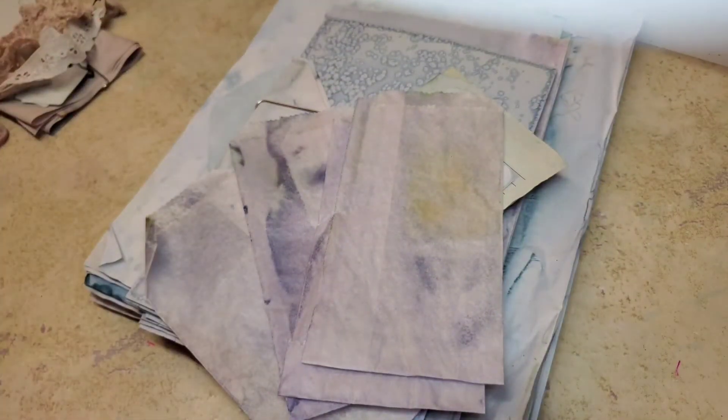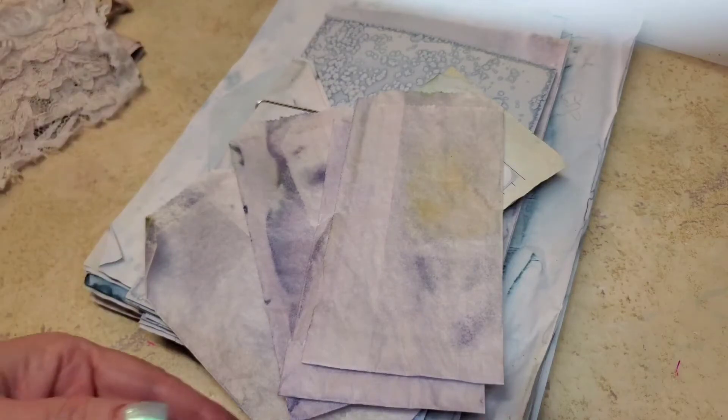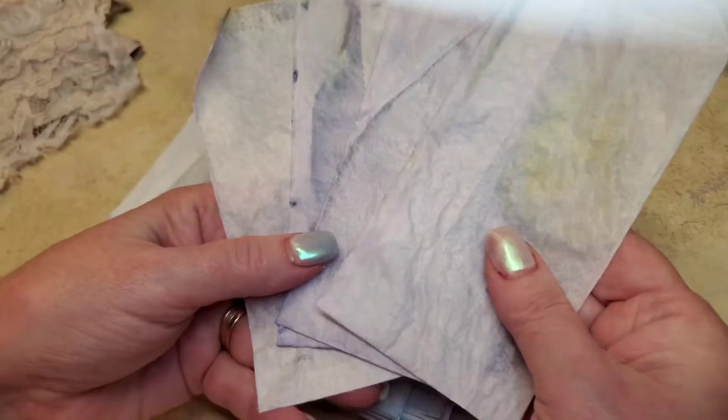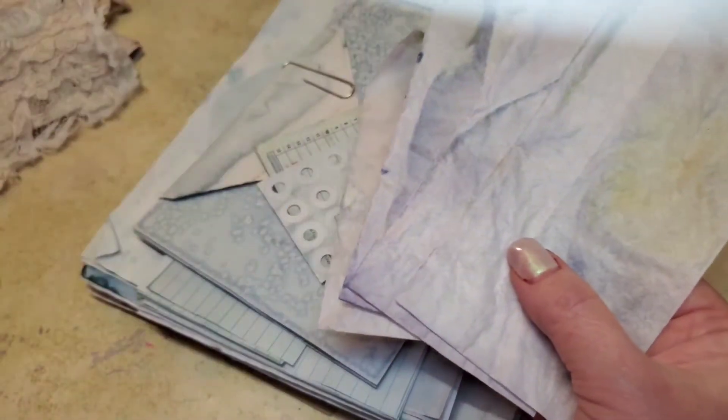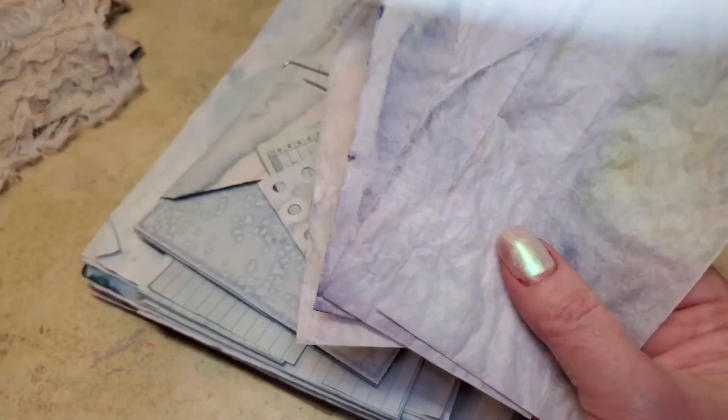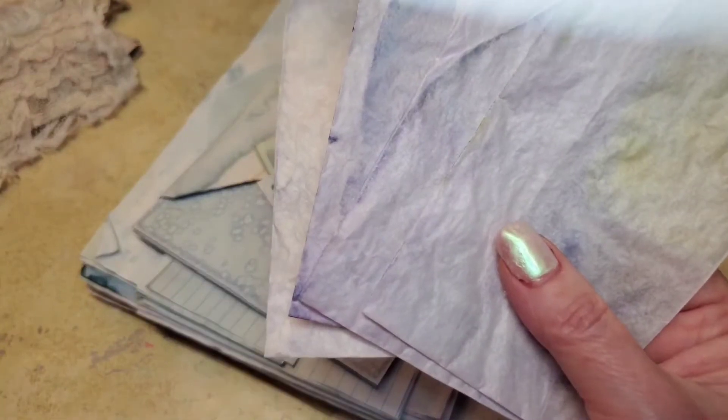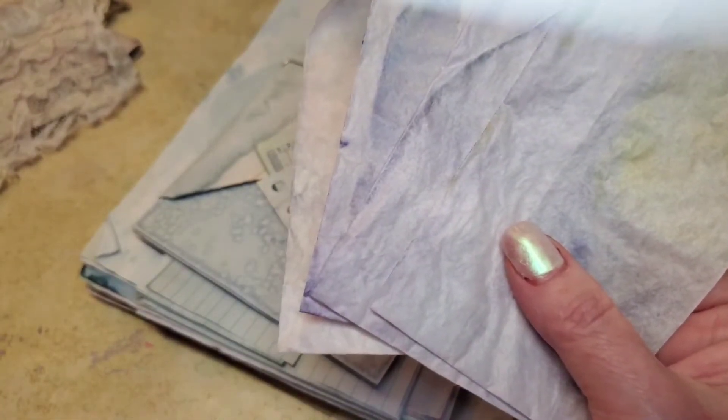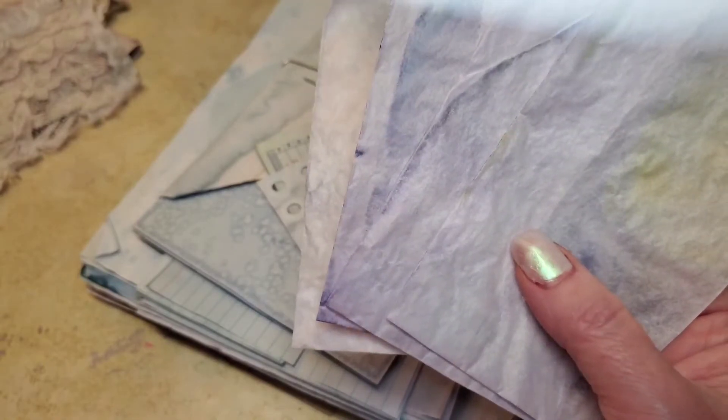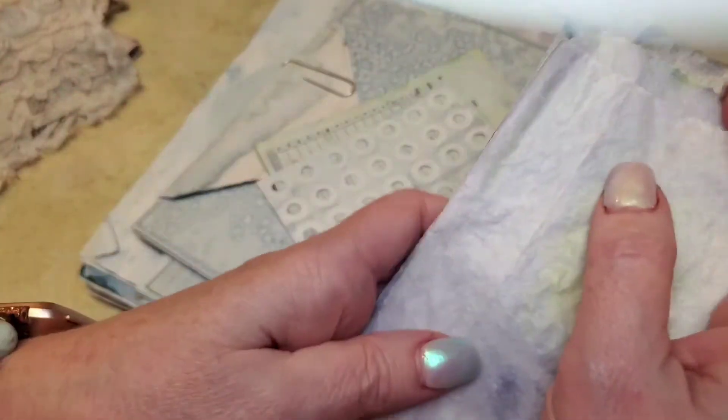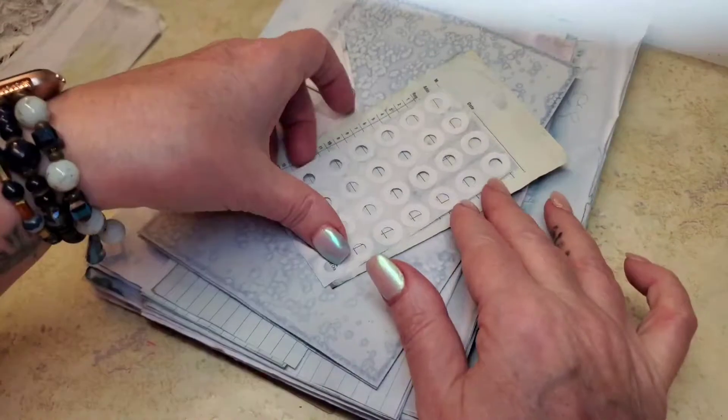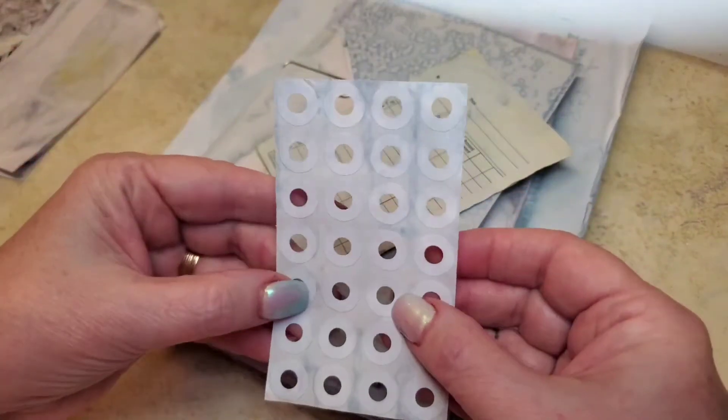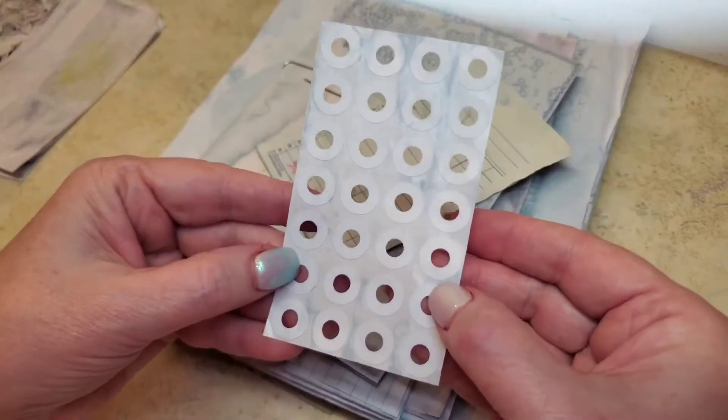And then you will get four glassine bags, and these are three by six. And you'll get one sheet of reinforcement holes, and there's 28 on here.